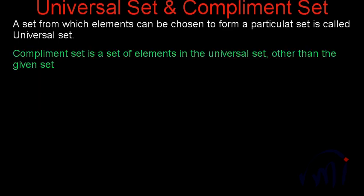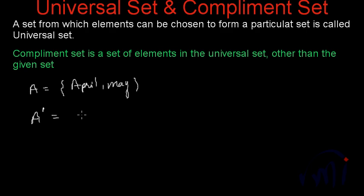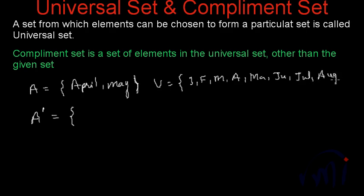What is a complement set? A complement set is a set of elements in the universal set other than the given set. As we were discussing, the set of summer holidays was the set of two months — April and May. The complement set of this set will be represented as A dash, and it will contain all the other months which are not in set A, taken from the universal set which is January, February, March, April, May, June, July, August, September, October, November and December.